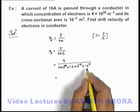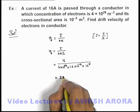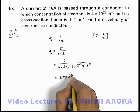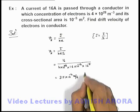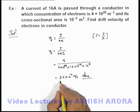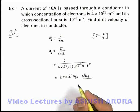On simplifying this expression, we'll get 2.5 into 10 to power minus 4 meter per second. That will be the answer to this problem, that is drift speed of free electrons in the conductor.